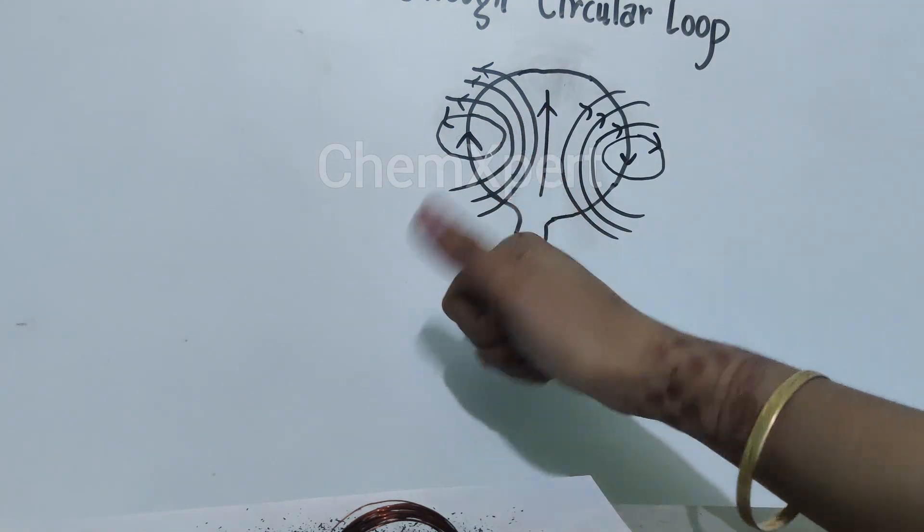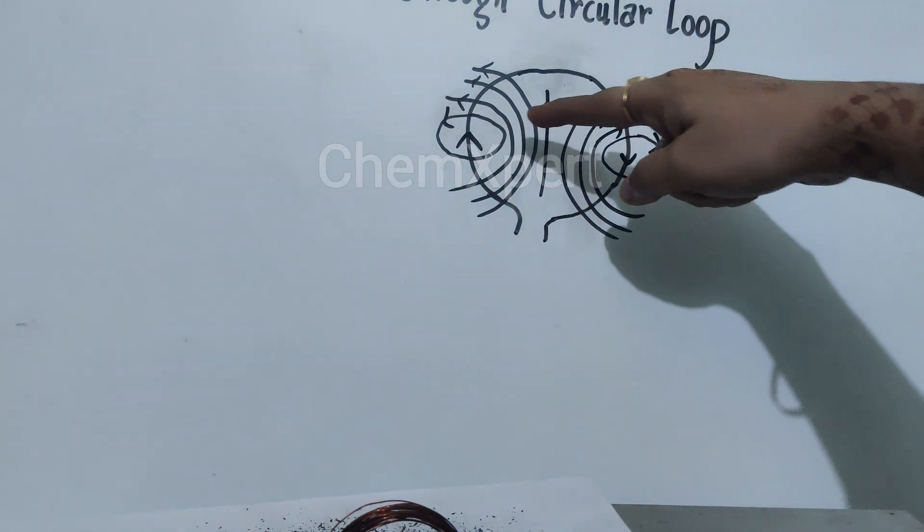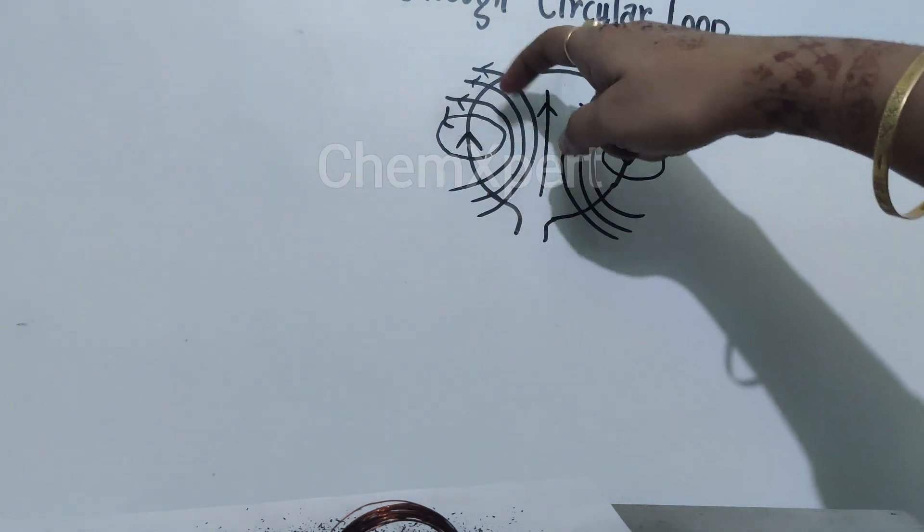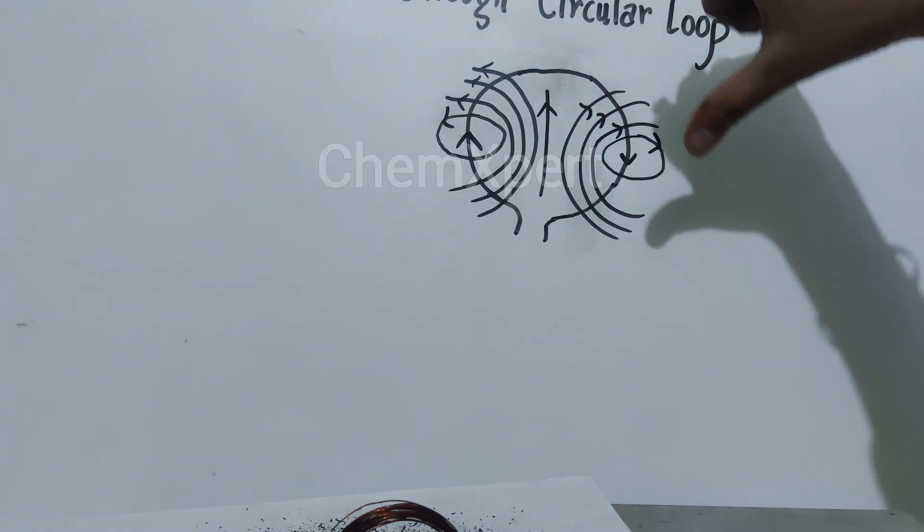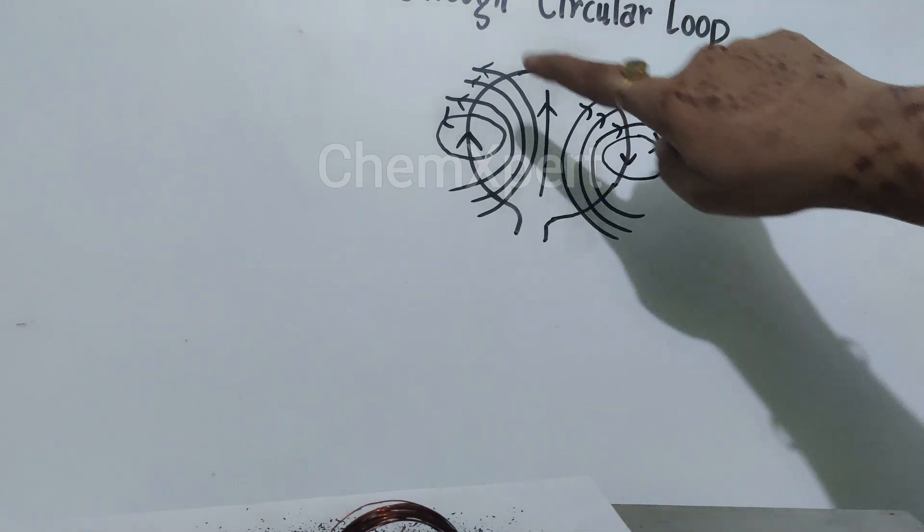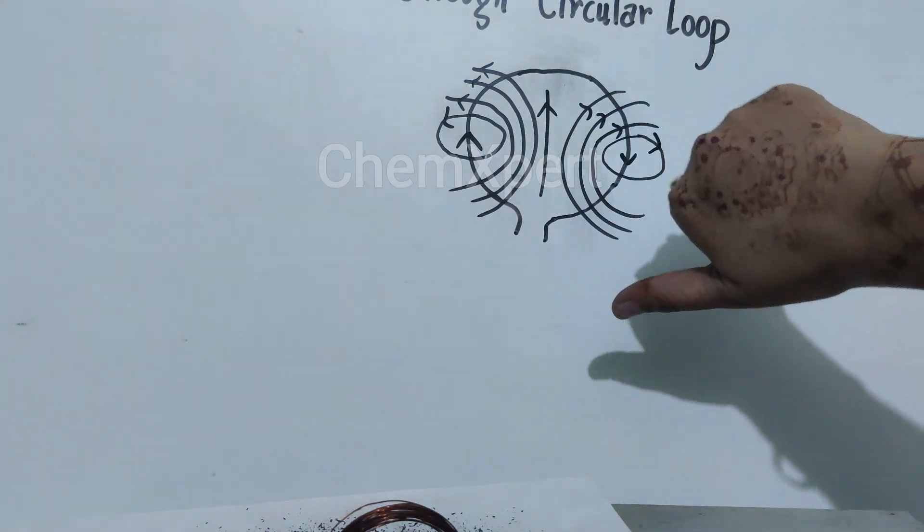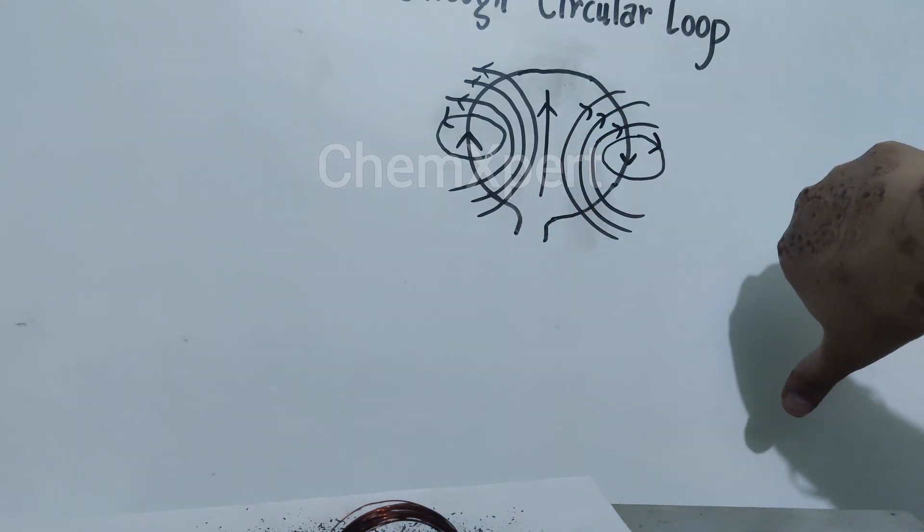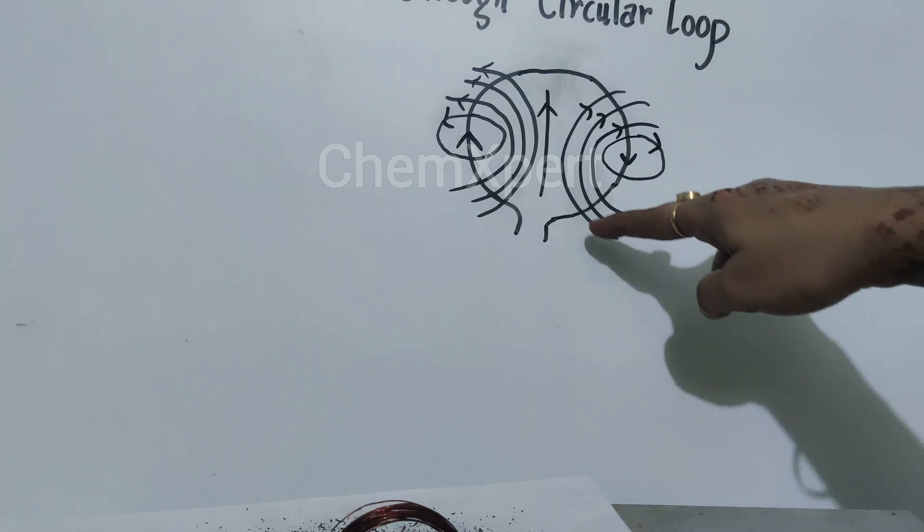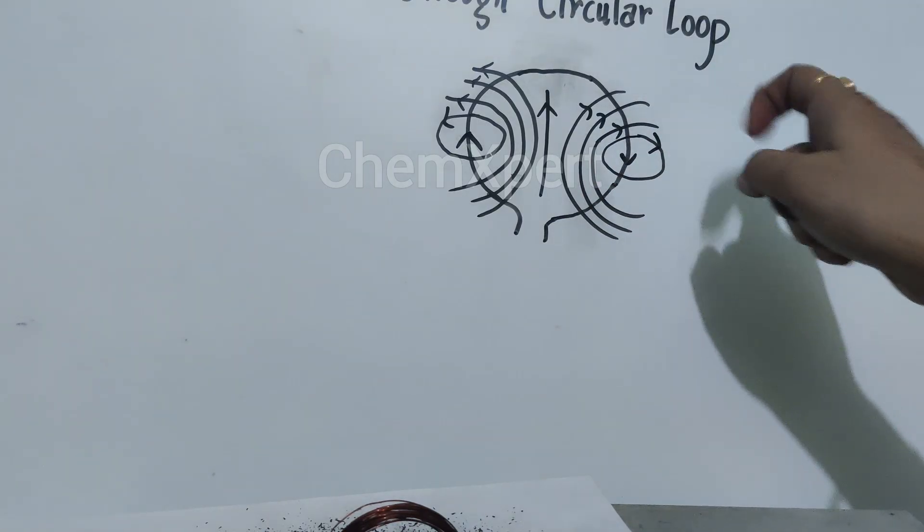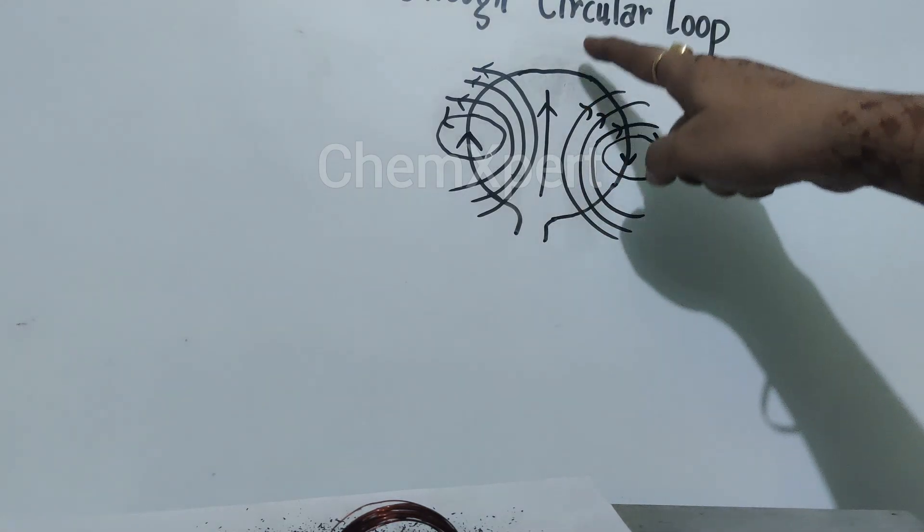The curved fingers will give us the direction of the magnetic field. Here they are anti-clockwise. Similarly, when the current is in the downward direction at this part of the arc, the curled fingers will be in the clockwise direction. So the magnetic field will be like this, and in the center they are moving straight.